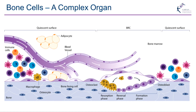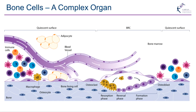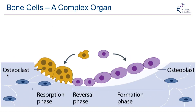We also have adipocytes — fat cells — in the bone marrow space. But what I'm going to be focusing on today is what we're starting to learn about osteoblasts and osteoclasts that are driving the turnover of bone tissue — the osteoclasts that resorb tissue and the osteoblasts, about which we're starting to learn an awful lot more.